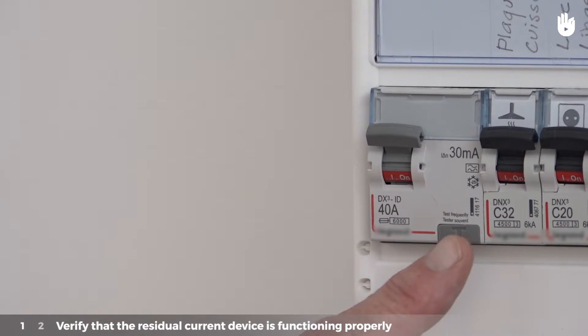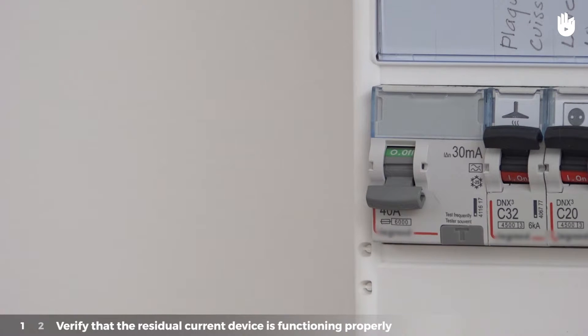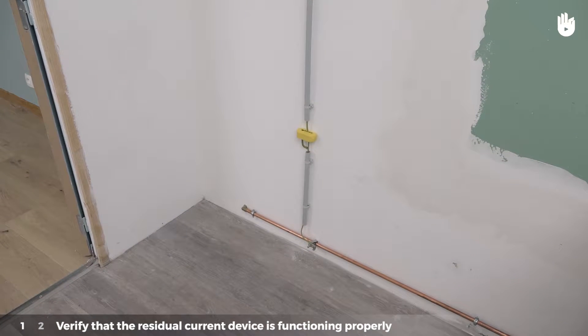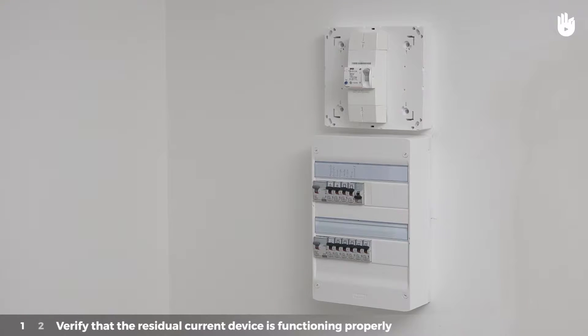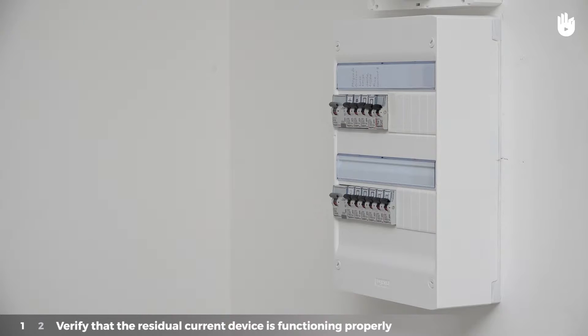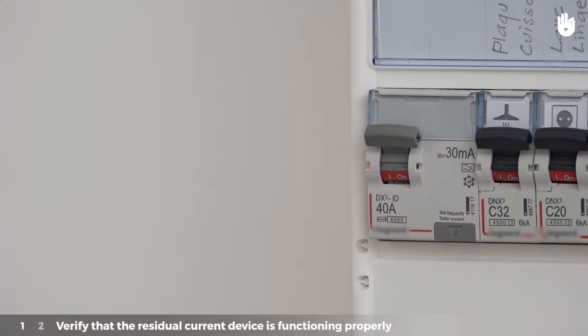Step 1: Verify that the residual current device is functioning properly. The residual current device is a system that compares the incoming current and the outgoing current. If they vary, the system will find that there is a current leak inside the appliance and the residual current circuit breaker will be triggered, cutting off the current. This is called tripping the circuit breaker.